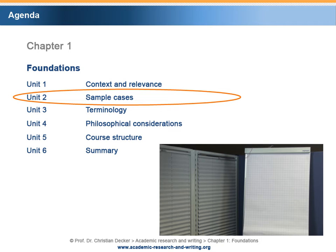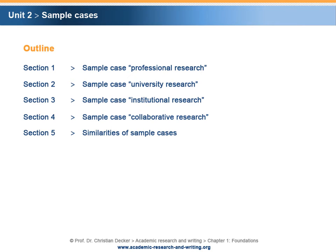Unit 2 – Sample Cases. Unit 2 is divided into five sections. Section 1 – Sample Case Professional Research. In the following sections, a number of sample cases will be presented in order to exemplify potential research activities. The first example deals with the case of professional research.